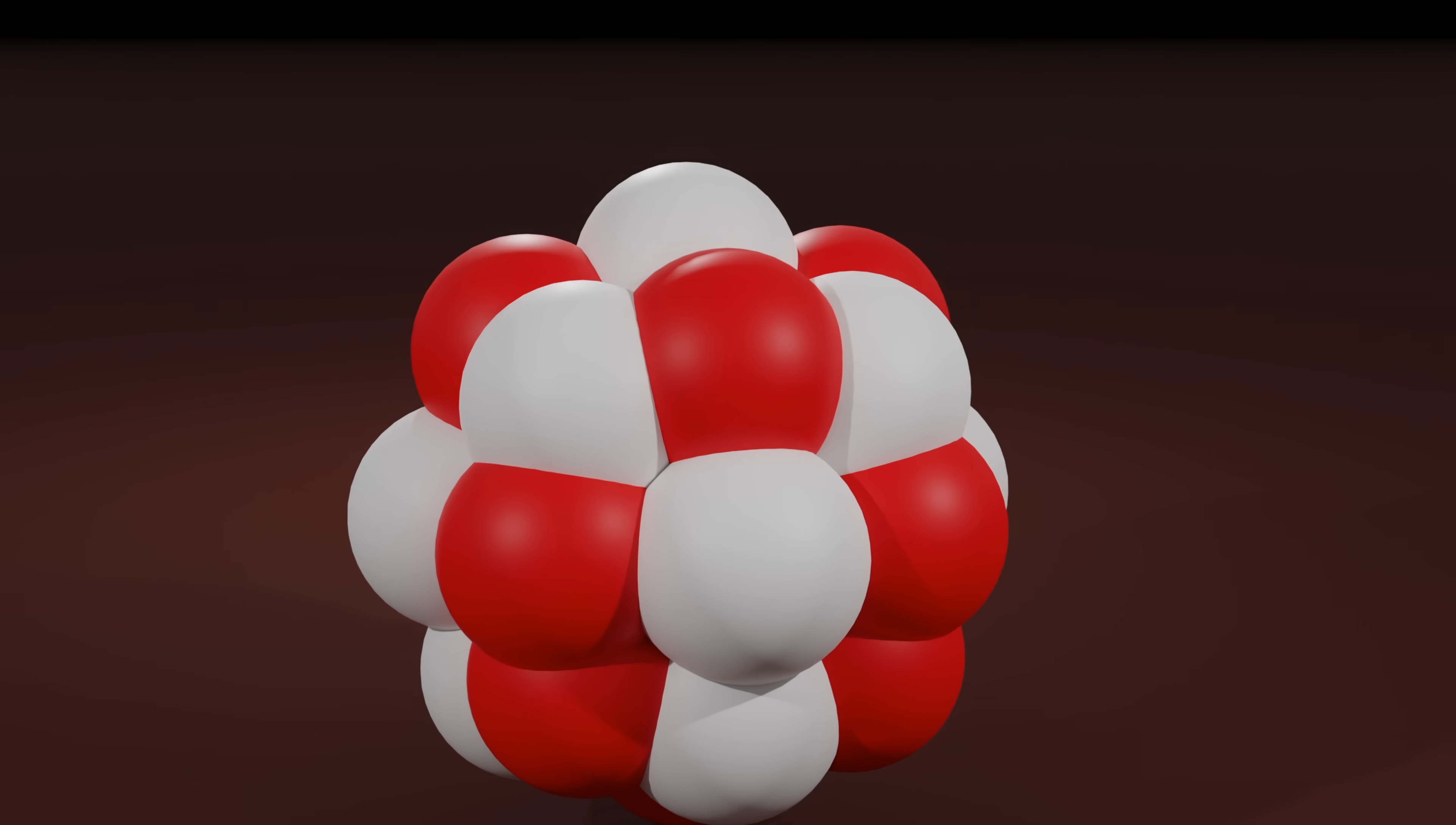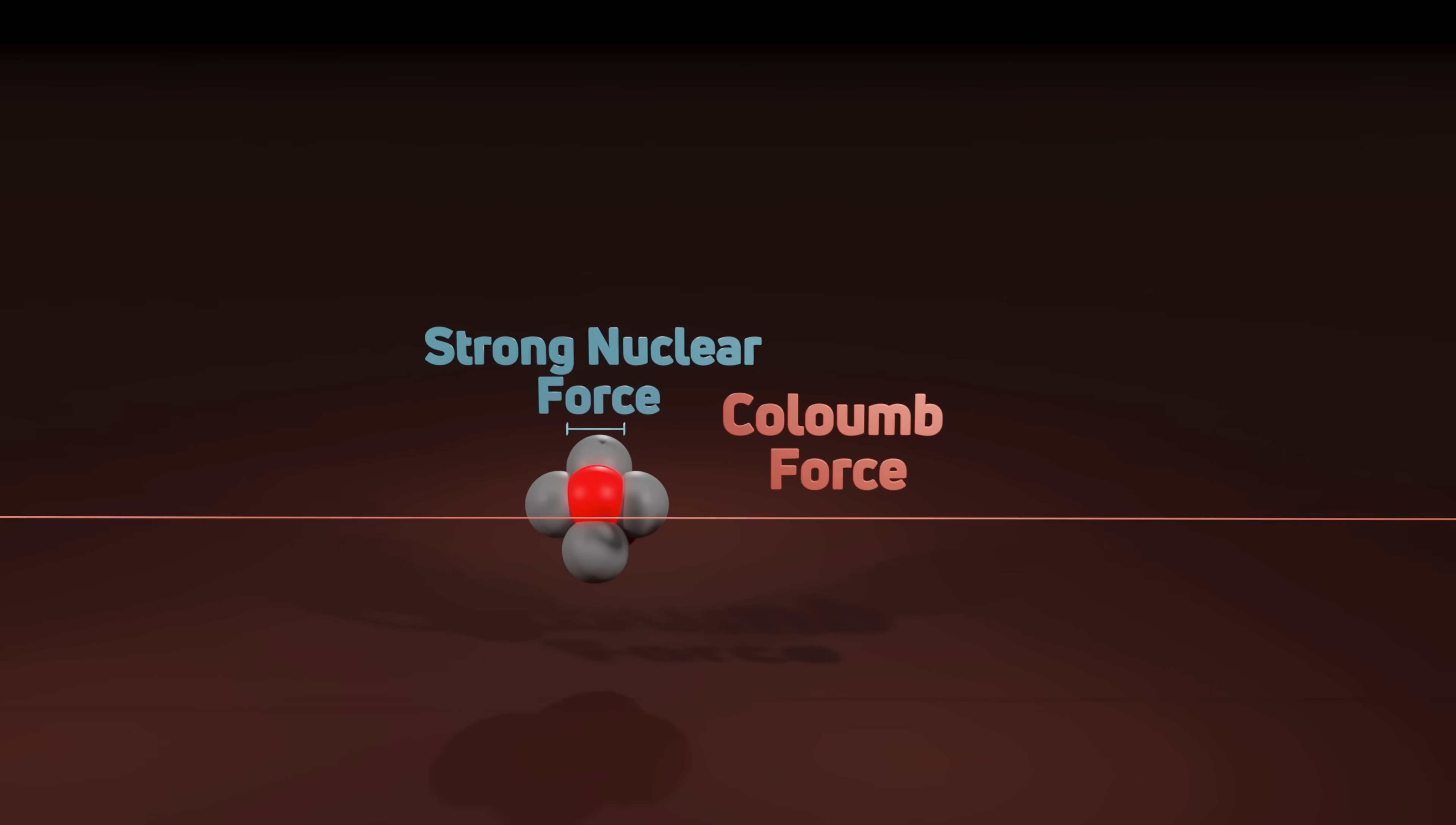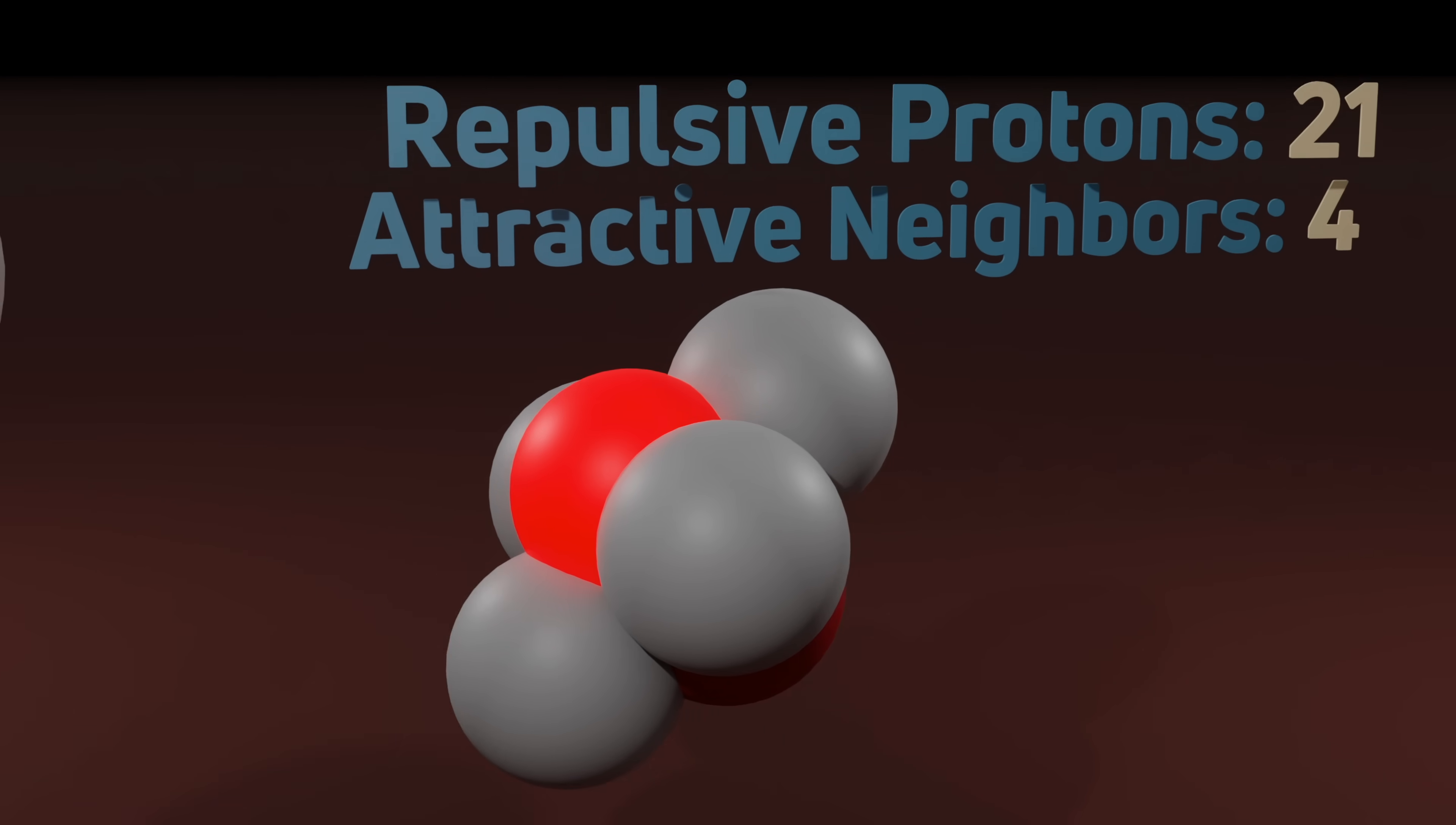This occurs because the strong nuclear force that holds nucleons and nuclei together only acts over a very short distance, whereas the Coulomb repulsion felt by the protons extends over the entire nucleus. That means a proton is strongly attracted to all of its immediate neighbors, but repulsed by every other proton in the nucleus. As nuclei get bigger, each additional proton increases the amount of repulsion every other proton experiences. We can mitigate this repulsion and increase stability by adding more neutrons.